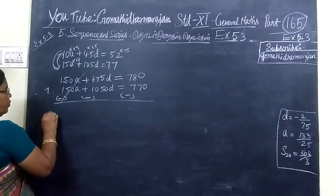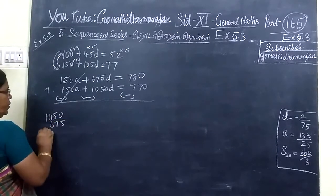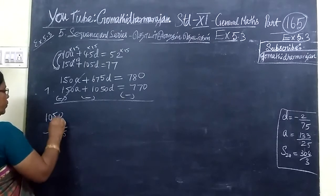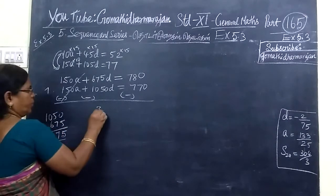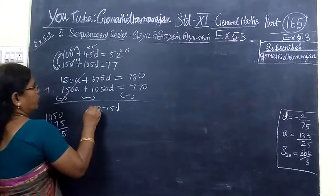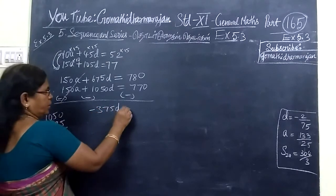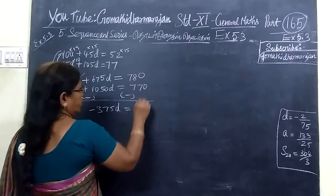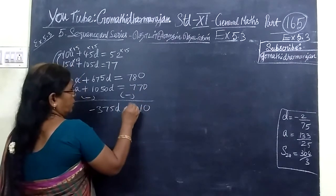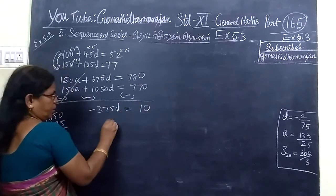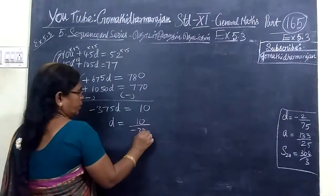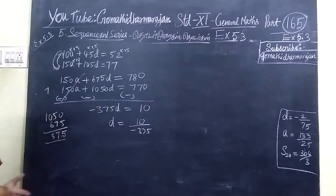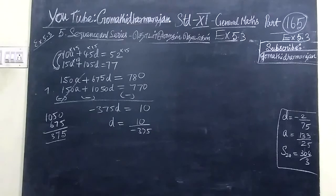1050 minus 675. So, 375D. Minus minus becomes plus.